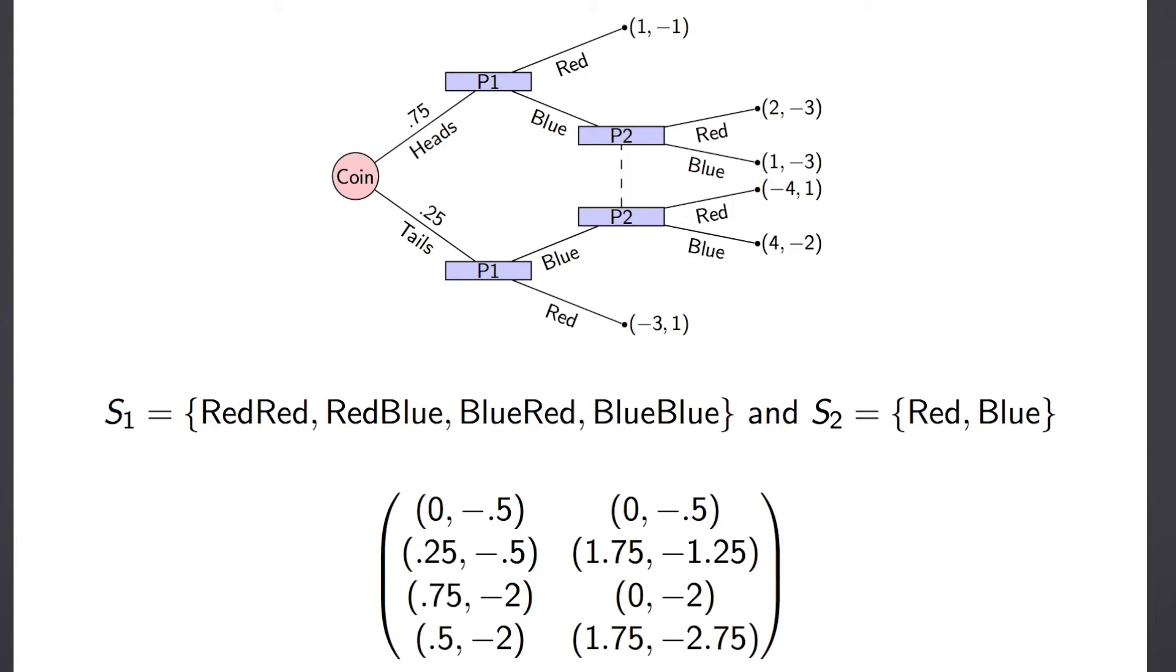Thankfully this game is actually quite quick to solve because we see that S1 dominates S2, at which point our game is reduced to just a single column and we see that the Nash equilibrium is blue red and red.